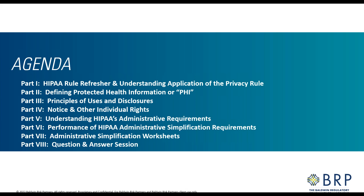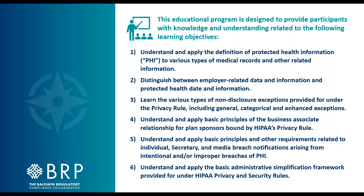We do have a packed agenda. In part one, we will do a HIPAA refresher and an understanding of how to apply the privacy rule. Part two defines PHI or protected health information. Part three covers principal uses and disclosures. Part four discusses the notice and other individual rights under HIPAA. Part five reviews HIPAA's administrative requirements. Part six covers administrative simplification requirements. Part seven has worksheets, and we close with a question and answer session.